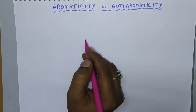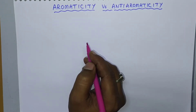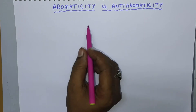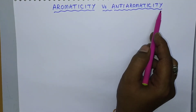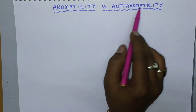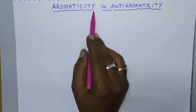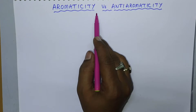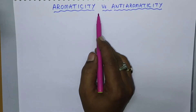Hi students, welcome to my channel. Today in this session we are going to discuss the major difference between aromaticity and anti-aromaticity. Aromaticity means it consists of a collection of properties of a given molecule.